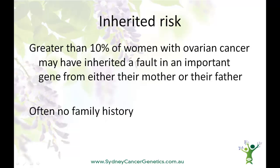So why isn't there always a family history of cancer in this situation? Well, for a start, not everyone in a family who inherits a genetic mutation will get a cancer. Also, if it was the father who had the genetic mutation, he's not going to get an ovarian cancer, but he can pass the fault in the gene on to his sons and daughters — and his daughters may be at increased risk.